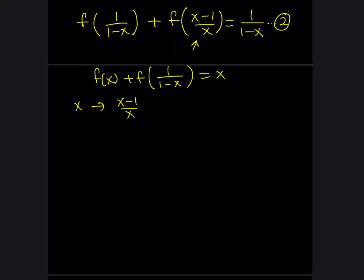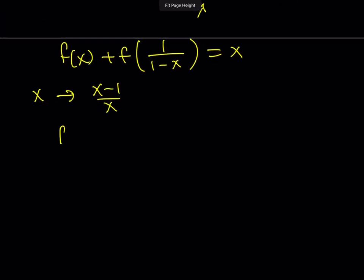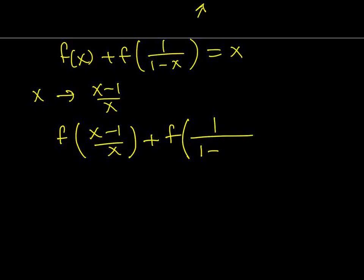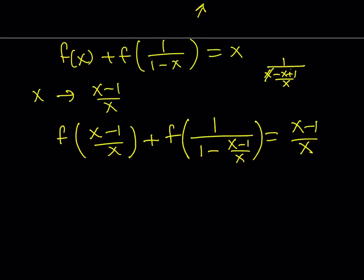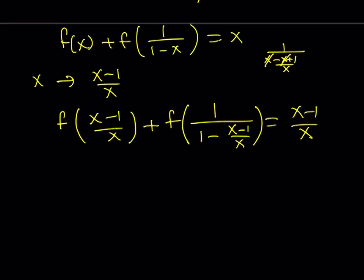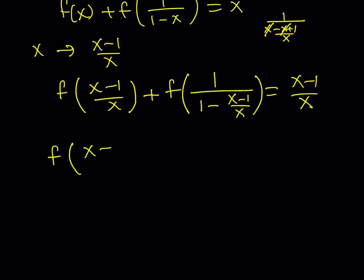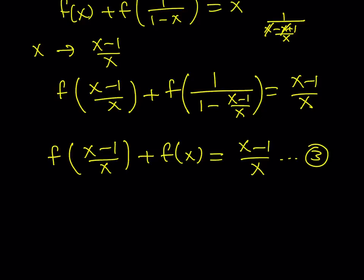When you do that substitution, you get f((x-1)/x) + f(1/(1 - (x-1)/x)). Simplifying the inner expression gives x minus x plus 1 over x — the x cancels, and you get f(x) back. So equation 3 is: f((x-1)/x) + f(x) = (x-1)/x.